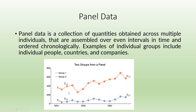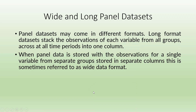You can see here we have time series data indicated in blue and orange colors, but the data has been collected for two different groups — this is panel data. We can also have wide and long panel data sets. Long format data sets stack the observations of each variable from all groups across all time periods into one column. When panel data is stored with observations for a single variable from separate groups in separate columns, this is referred to as wide data format.